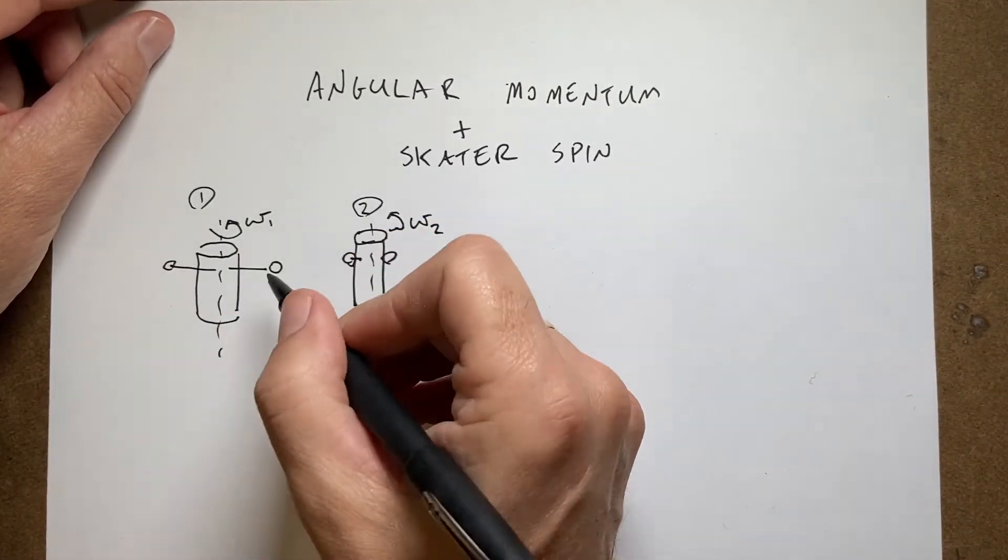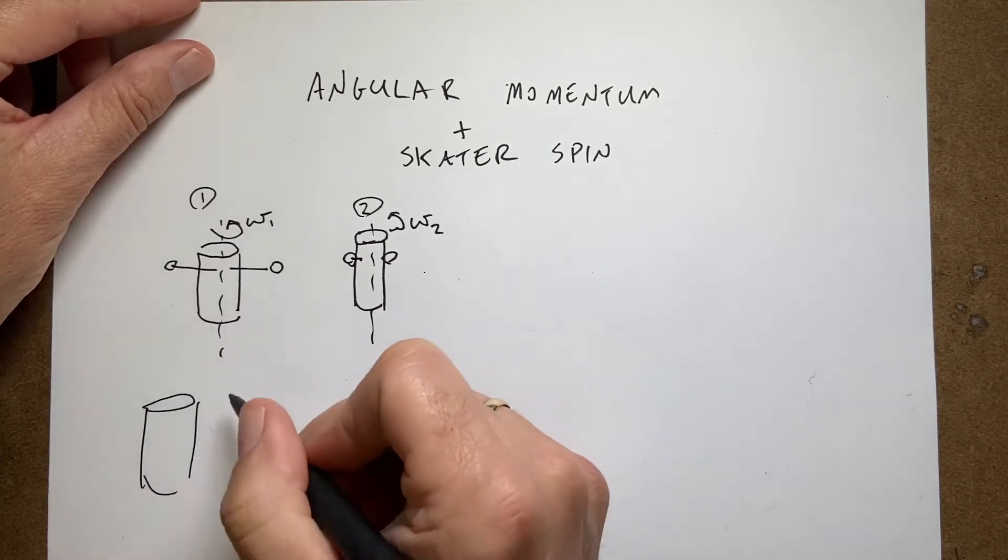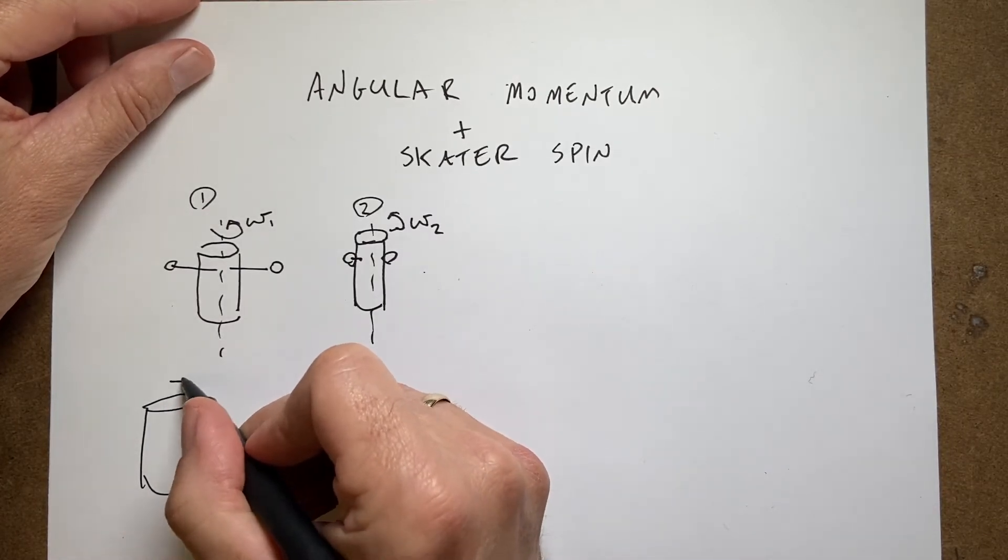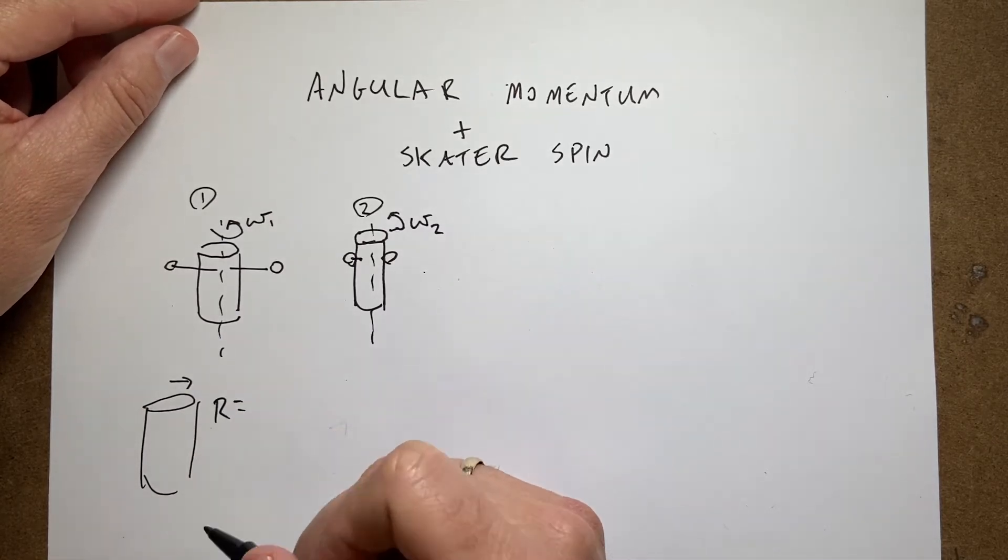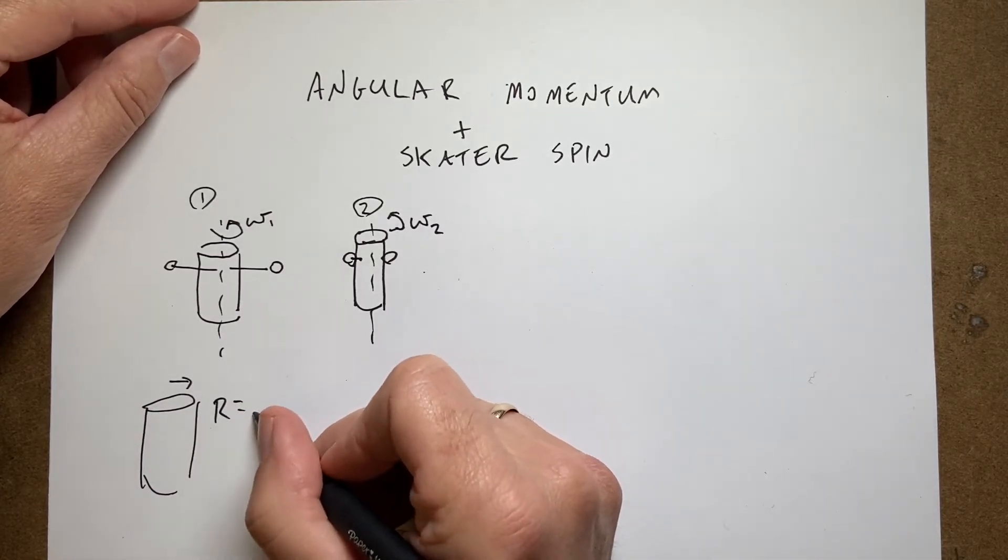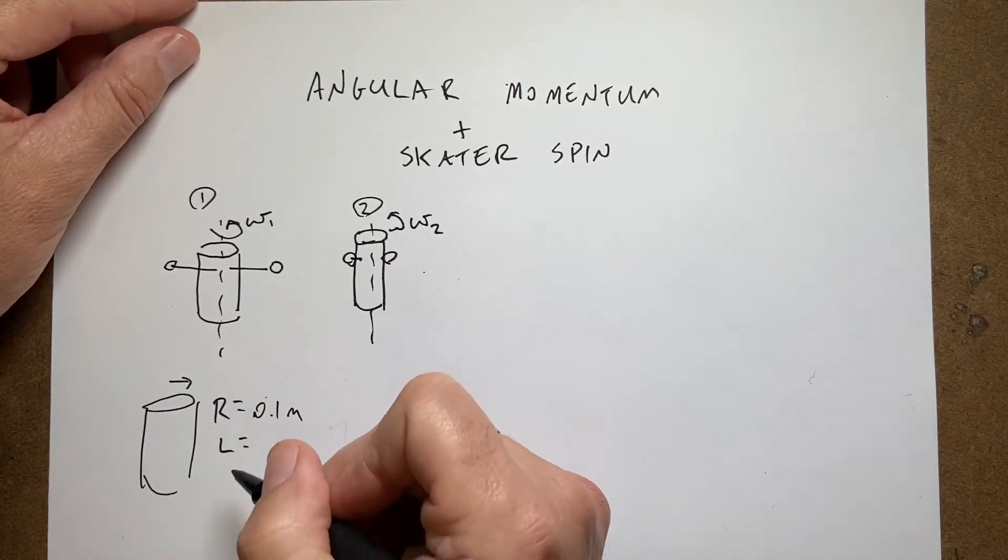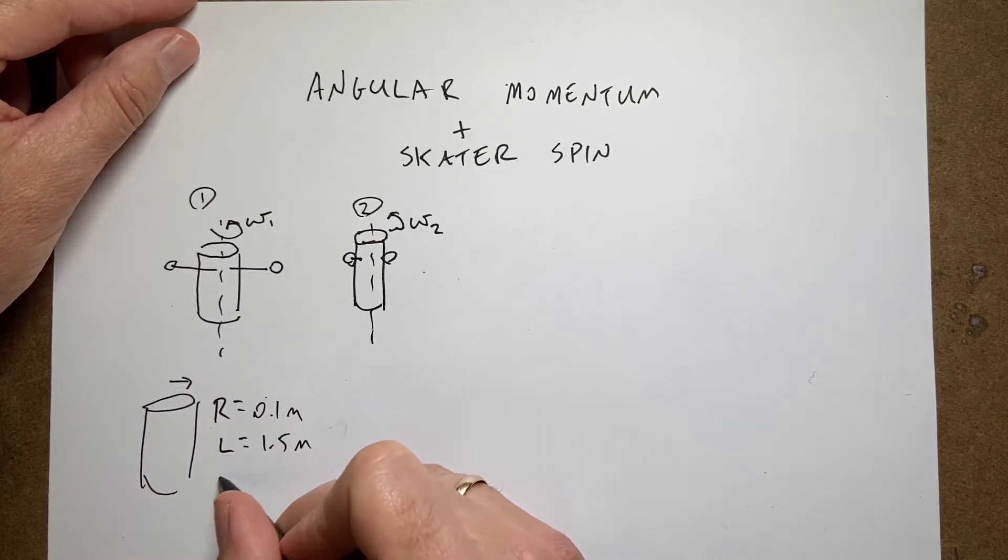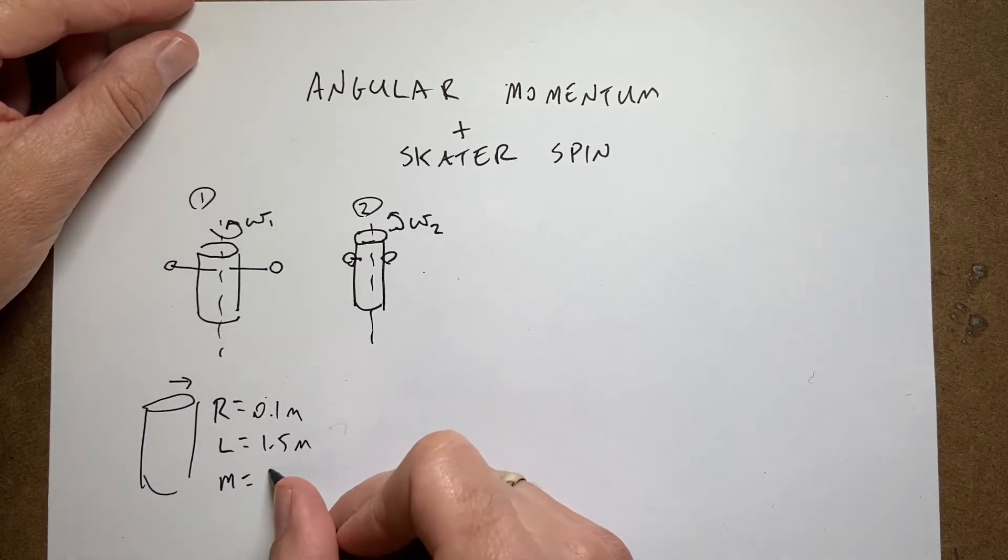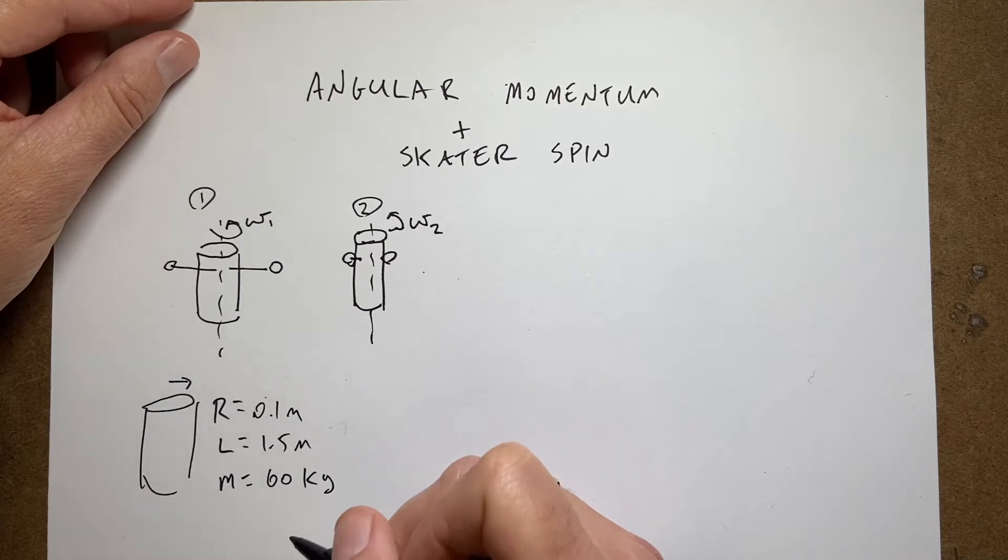So I need some things here. Let's say here's my cylinder human and let's say this has a radius of about 0.1 meters, a length of 1.5 meters, and a mass of 60 kilograms. You can change these numbers to make yourself happy.